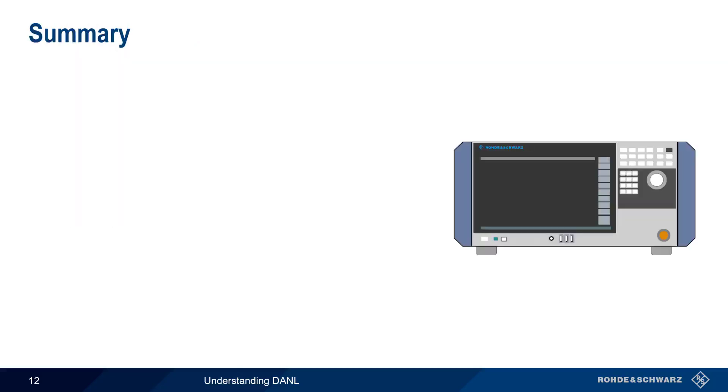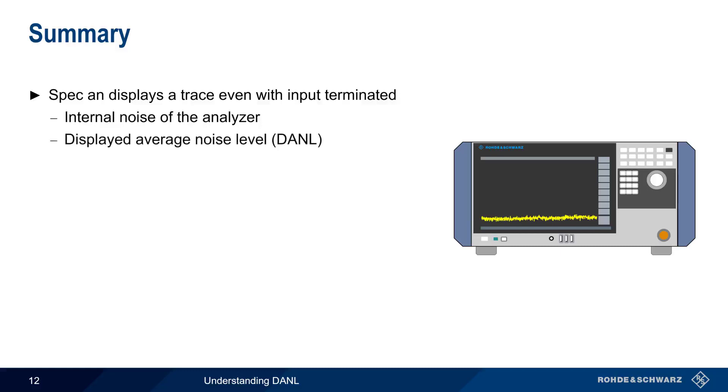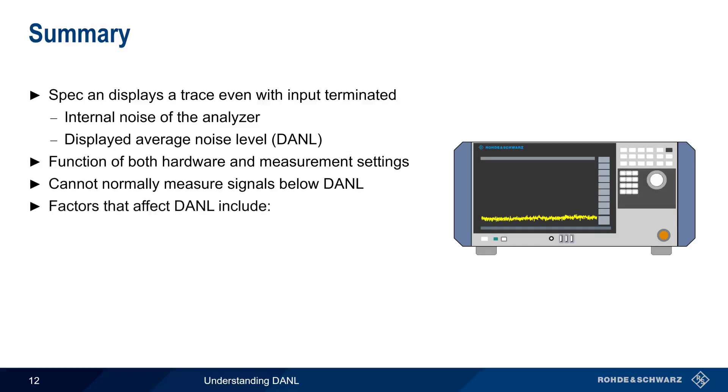Let's end with a brief summary. A spectrum analyzer will display a trace even with its input terminated. This trace represents the internal noise of the analyzer, and is referred to as the Displayed Average Noise Level, or DANL. DANL is a function of both the analyzer's hardware, as well as measurement settings. DANL is important because an analyzer cannot normally measure signals below its DANL. Two of the most important factors impacting DANL are the analyzer's own noise figure and the configured resolution bandwidth.